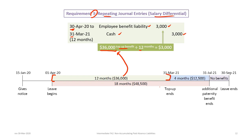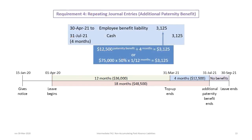For requirement four, we record the repeating journal entry for the additional paternity benefit in the blue shaded area. That additional benefit begins April 1st, 2021, and we record journal entries at the end of each month for four months, starting April 30th and ending July 31st, 2021. Each month, we debit the employee benefit liability and credit cash for $3,125, calculated as the $12,500 paternity benefit divided by four months, or equivalently 50% of the annual salary prorated over 12 months.